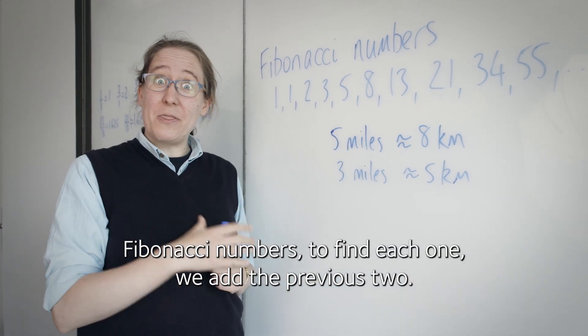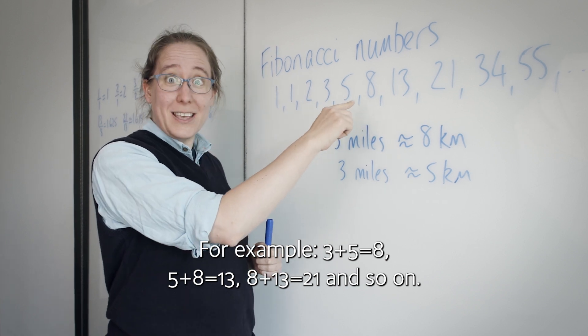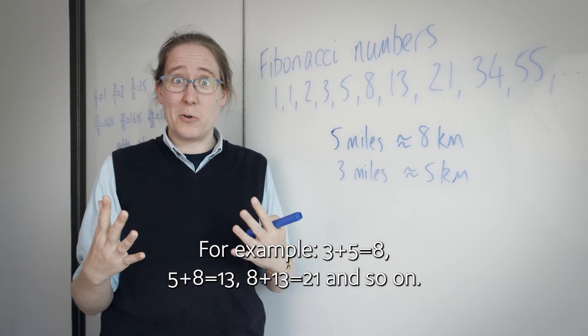Fibonacci numbers - to find each one, we add the previous two. For example, 3 plus 5 is 8, 5 plus 8 is 13, 8 plus 13 is 21, and so on.